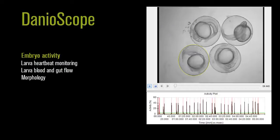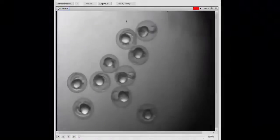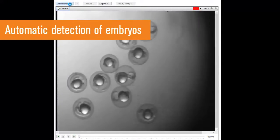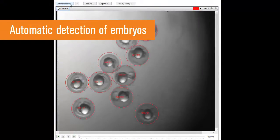Let's take a look at embryo activity such as tail flicks or convulsions. With one push of the button, DanioScope automatically detects the embryos in your video.